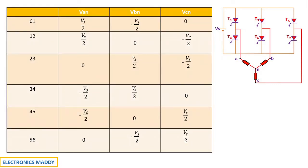This table is very important because once you know how to arrive at it, you can directly draw the waveform. For 6-1 conduction: thyristor 1 connects phase A to positive, so Van = Vs/2; thyristor 6 connects phase B to negative, so Vbn = -Vs/2; and no thyristor connects phase C, so Vcn = 0. Drawing equivalent circuits for each case would take too long, so we follow this shortcut for all remaining cases.